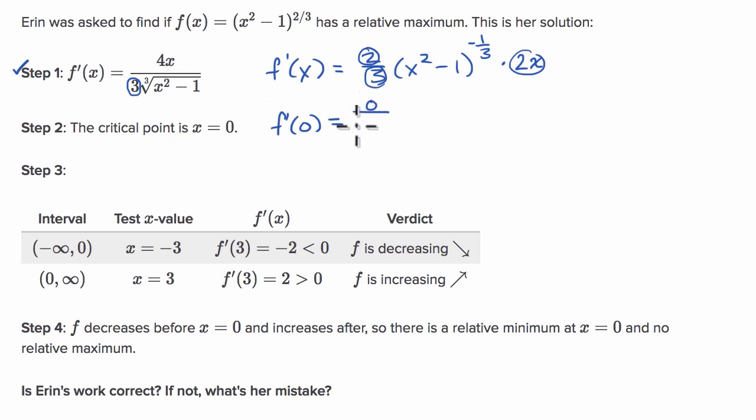And so it does indeed seem that f prime of zero is going to be four times zero. It's going to be zero over three times the cube root of zero minus one of negative one. And so this is three times negative one, or zero over negative three.